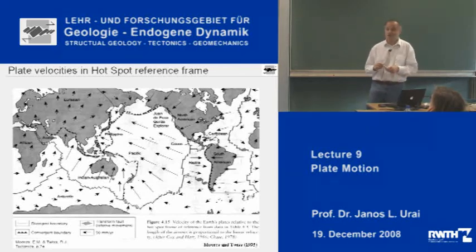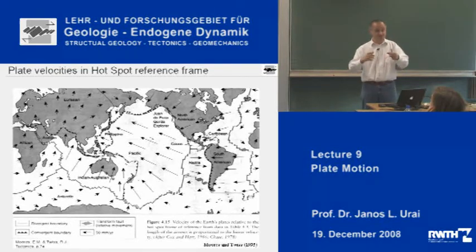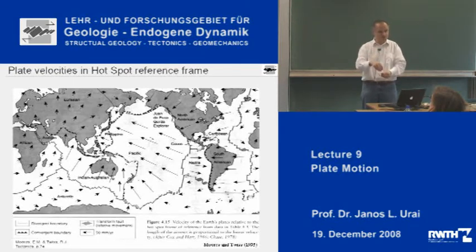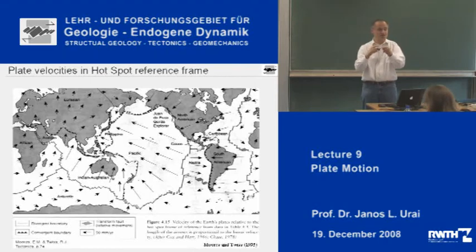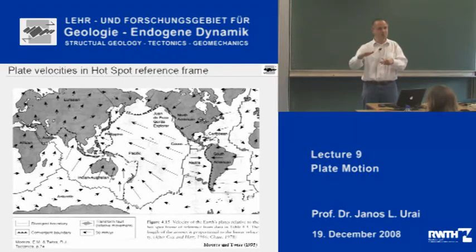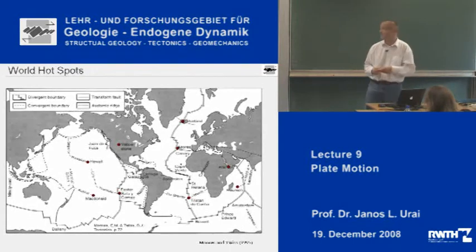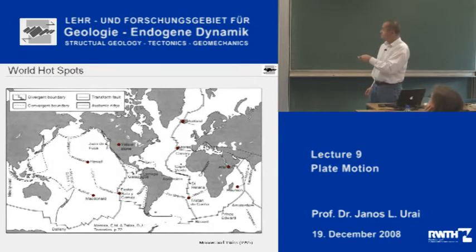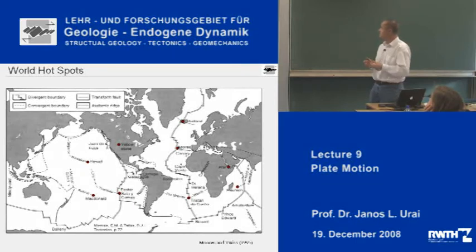What are hot spots? Hot spots — which we will cover in the next lecture — are places where, from very deep in the mantle, hot mantle material comes up through the mantle. Where it reaches the surface, it melts at least partially, forms magma, which is marked by volcanoes. These hot spots are thought to be very, very stable on the planet — much more stable than the motion of the plates themselves. Looking at these hot spots, there are quite a lot: the Hawaii one, the McDonald, the Easter Islands hotspot, Yellowstone, Azores, Iceland, Afar, Reunion, and the Tristan da Cunha hotspot.